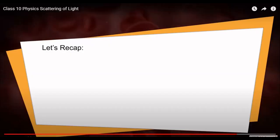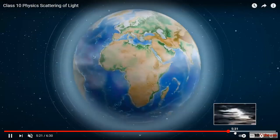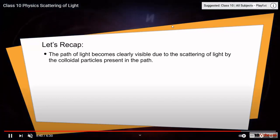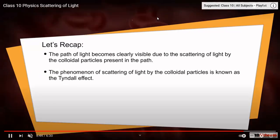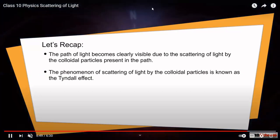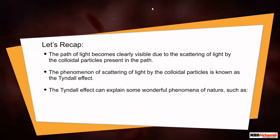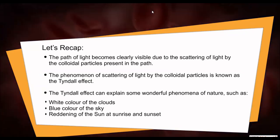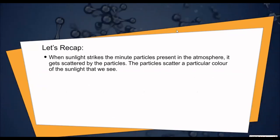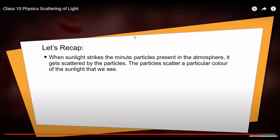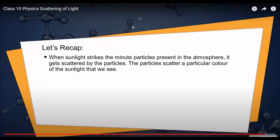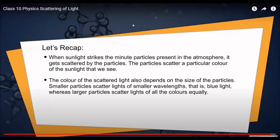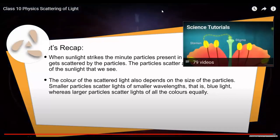Let's recap what we discussed. The path of light becomes clearly visible due to the scattering of light by the colloidal particles present in the path. The phenomenon of scattering of light by a colloidal particle is known as Tyndall effect. Tyndall effect helps us understand wonderful phenomena of nature — like the blue color of the sky, the reddening of the sun during sunrise and sunset, and other things. When sunlight strikes minute particles in the atmosphere, it gets scattered. The particles scatter a particular color, and the sunlight we see is of that color. The color of scattering also depends on the size of particles: smaller particles scatter shorter wavelength light like blue, whereas larger particles scatter longer wavelength colors.